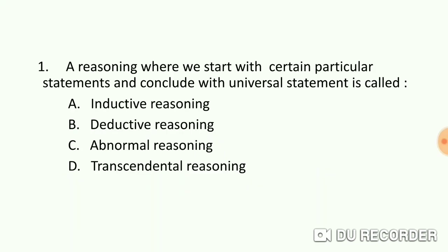A reasoning where we start with certain particular statements and conclude with a universal statement is called: A) inductive reasoning, B) deductive reasoning, C) abnormal reasoning, and D) transcendental reasoning. As we know, we have to choose between inductive and deductive. Since we start with particular statements and conclude with a universal statement, this method is known as inductive reasoning.